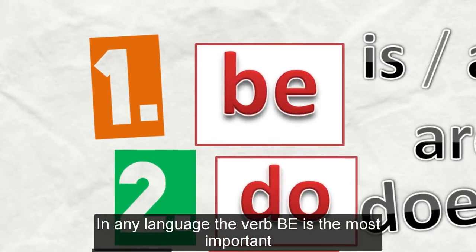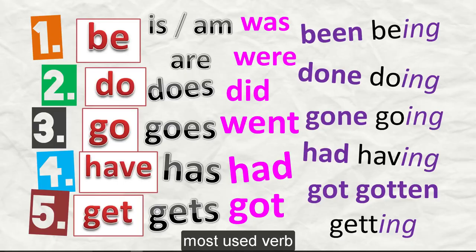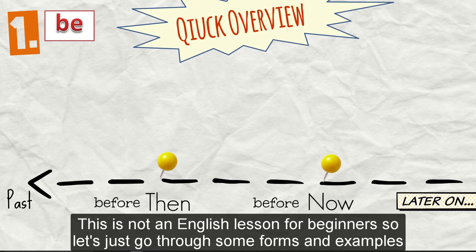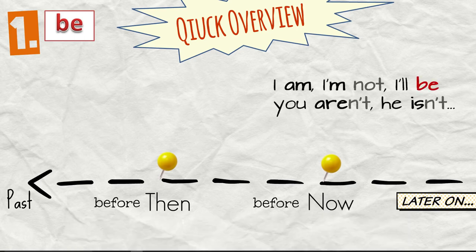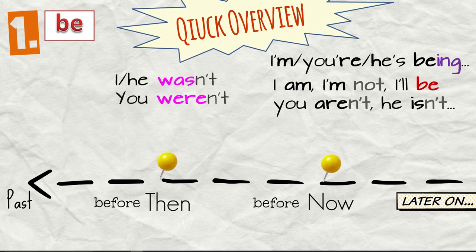In any language, the verb be is the most important, most used verb. In English, it has many forms. This is not an English lesson for beginners, so we'll just go through some of the forms and examples. Alright, so it's I am, you are, he is. Okay, then we say I'm being or you're being, he's being. In the past it's I was or I wasn't, he was, he wasn't, you were, you weren't.